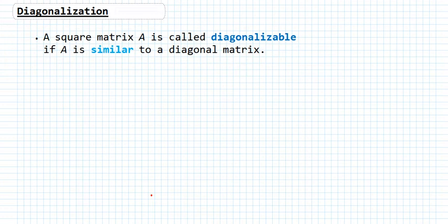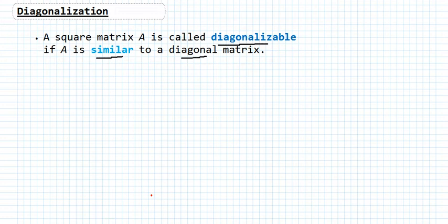In my last lecture I talked about when a matrix is called diagonalizable. Let me repeat that. A square matrix A is diagonalizable if the matrix A is similar to a diagonal matrix.